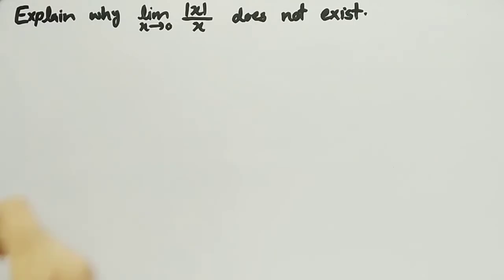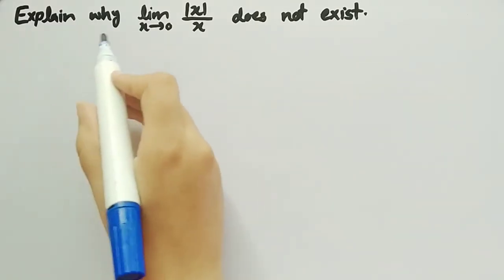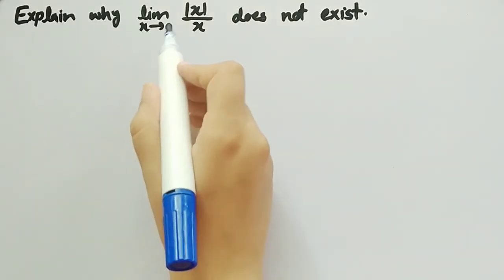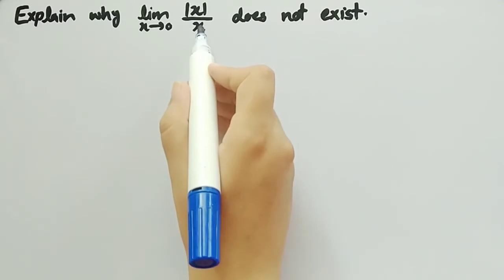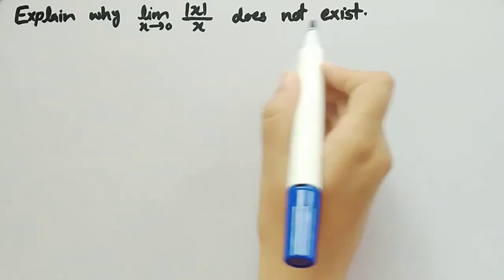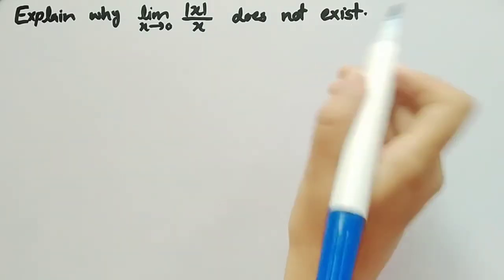In this video, we will explain why the limit as x approaches 0 of mod(x) divided by x does not exist.